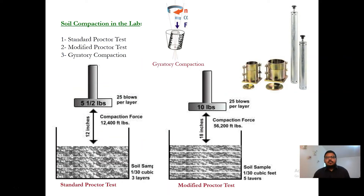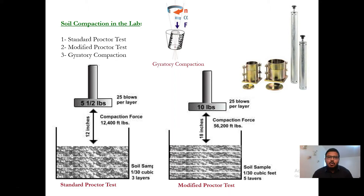In the laboratory there are three methods by which we can perform soil compaction: one is the standard Proctor test, another is the modified Proctor test, and the third one is gyratory compaction.